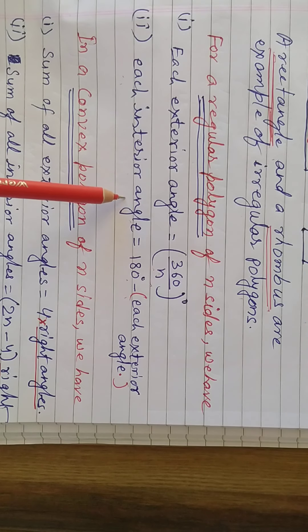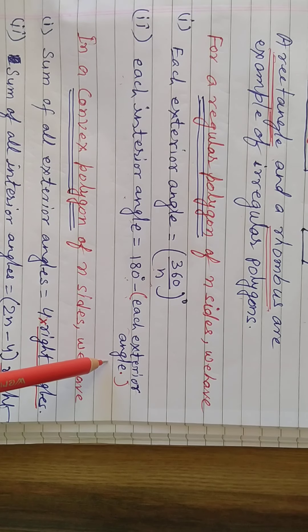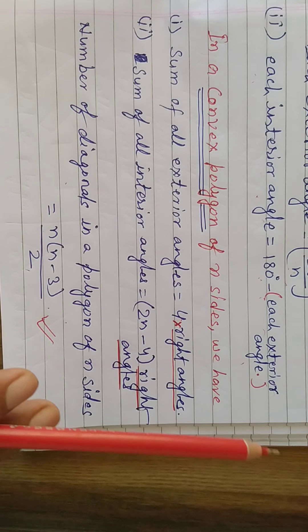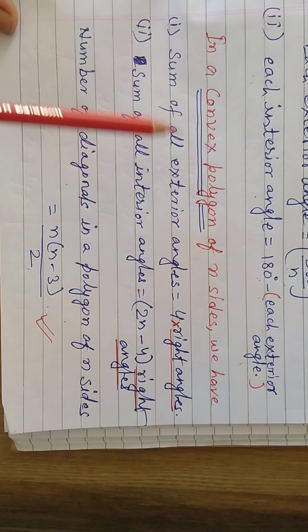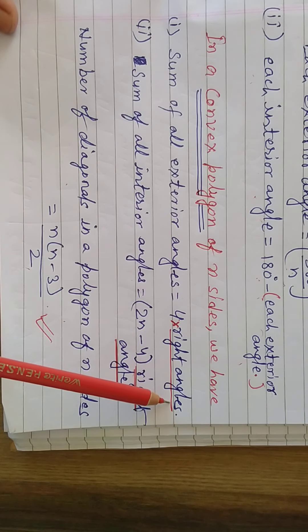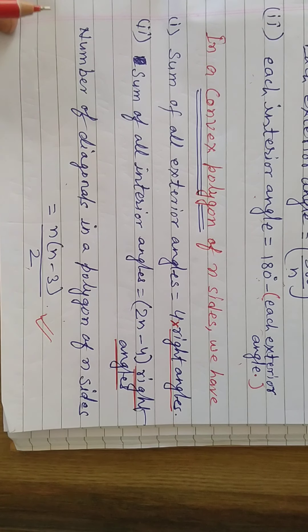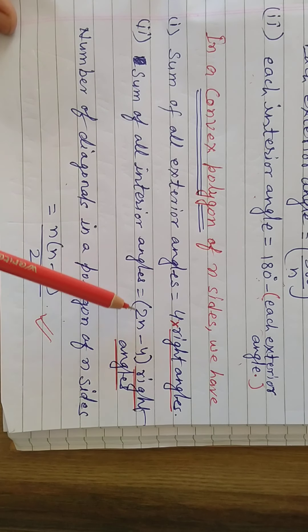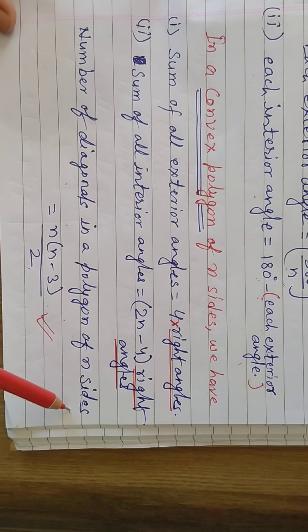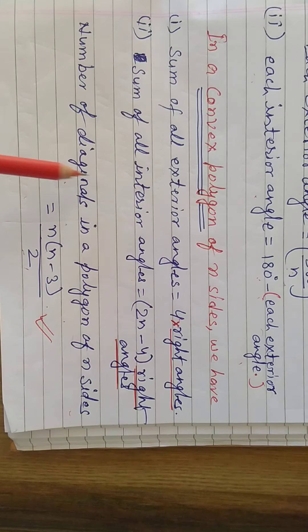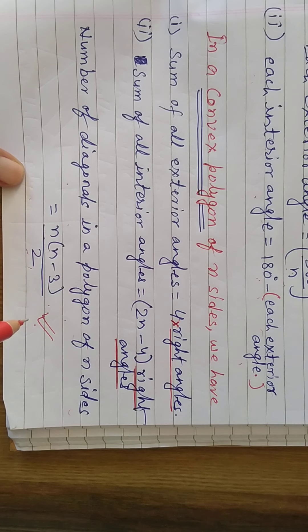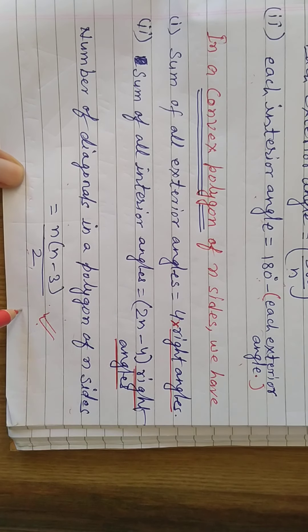In a regular polygon of n sides, each exterior angle equals 360/n degrees, where n is the number of sides. Each interior angle equals 180 degrees minus each exterior angle. In a convex polygon of n sides, the sum of all exterior angles equals 4 right angles, sum of all interior angles equals (2n − 4) right angles, and the number of diagonals equals n(n−3)/2. Learn these formulas and you can easily solve problems related to this topic.